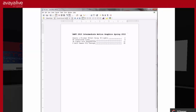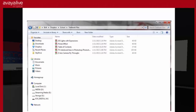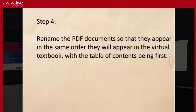What we're going to want to do is combine all of our PDF documents with our table of contents all in the same folder. So I'm going to add that table of contents to my master folder with the other files. Then I'm going to rename these PDF documents so they appear in the same order they will appear in the virtual textbook, with the table of contents being first — or second if you choose to use a cover.